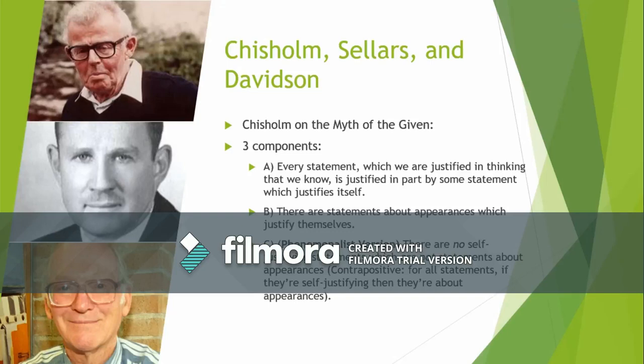Now with Wittgenstein and more out of the way, we're going to discuss Chisholm, Sellars, and Davidson. Starting with Chisholm, as pictured in the top picture, he does go in order. However, he thinks that there are three components to the given.